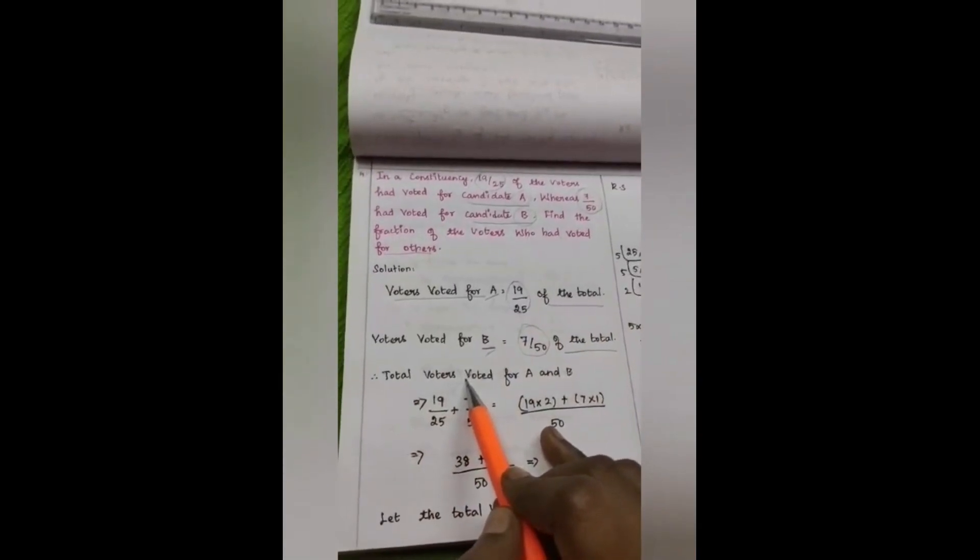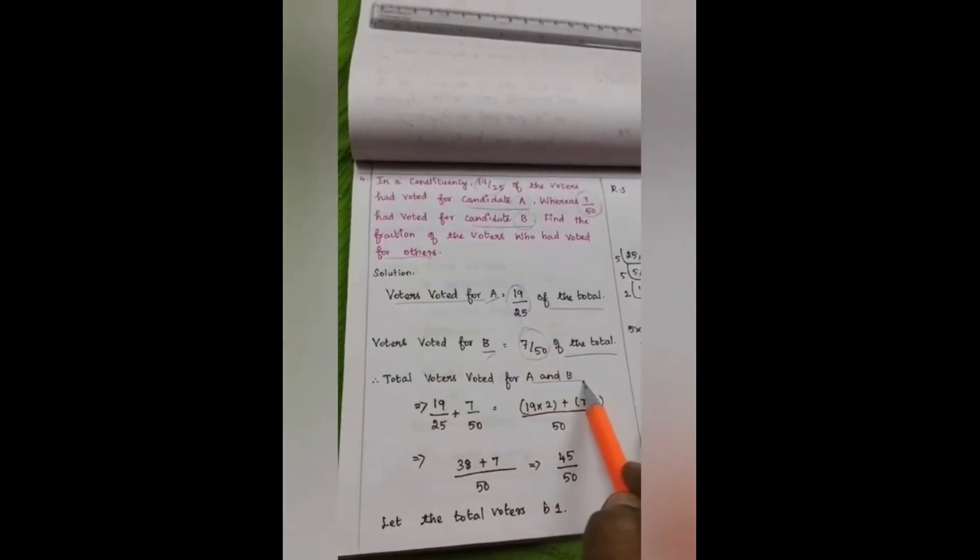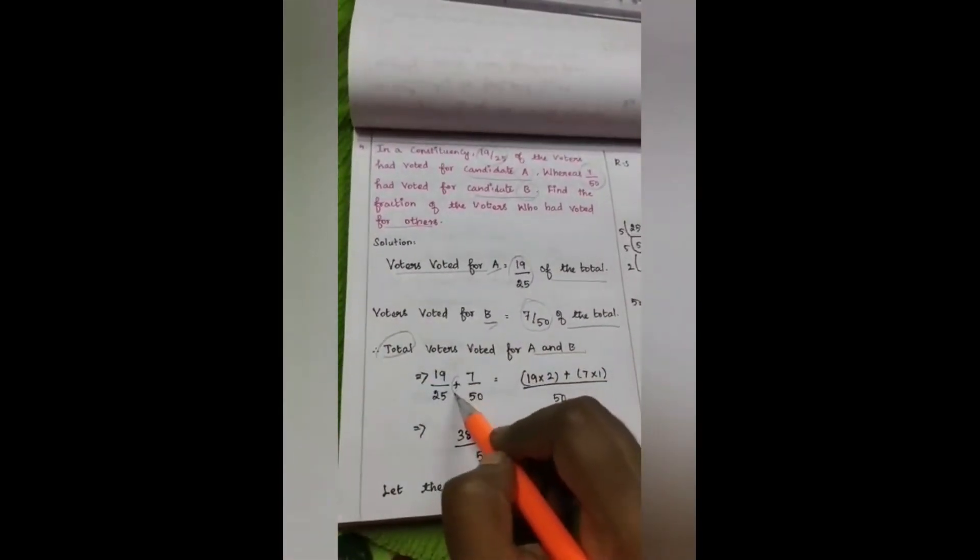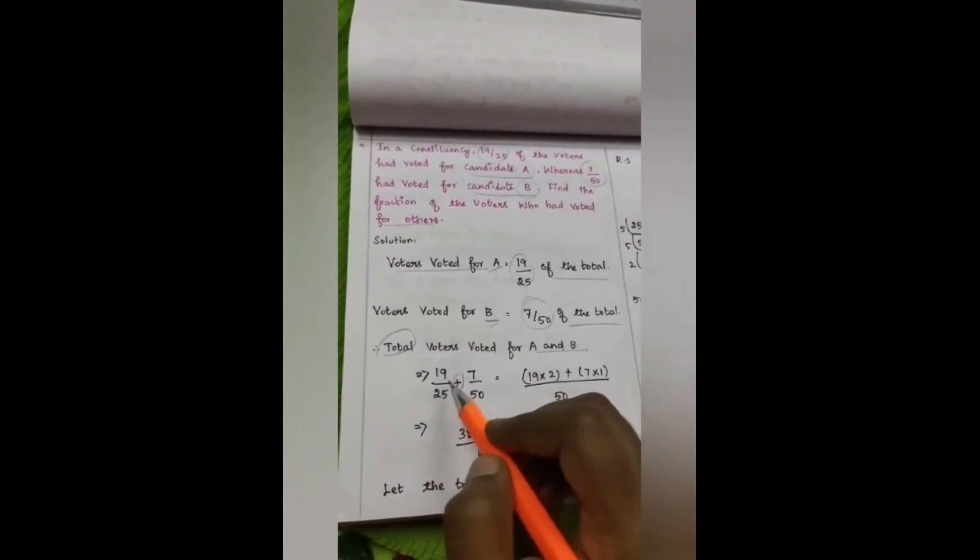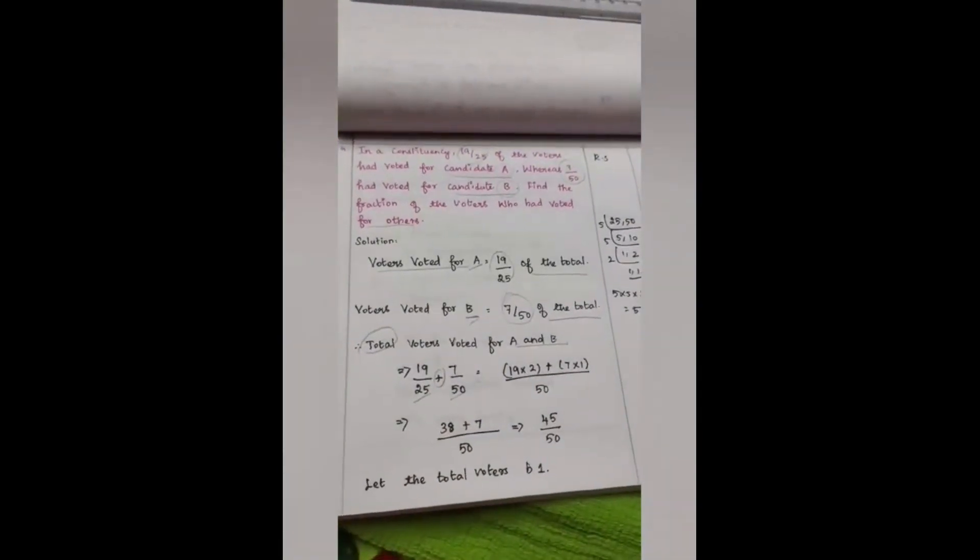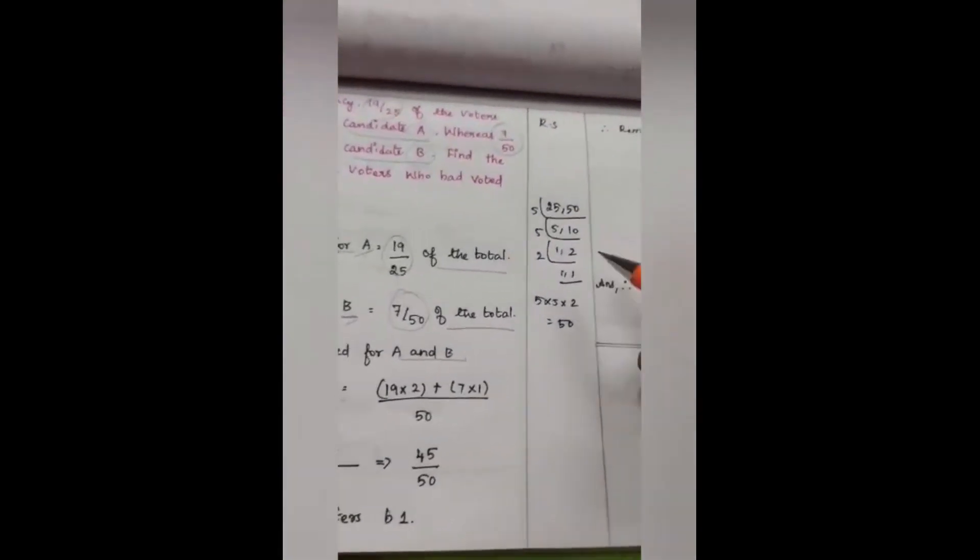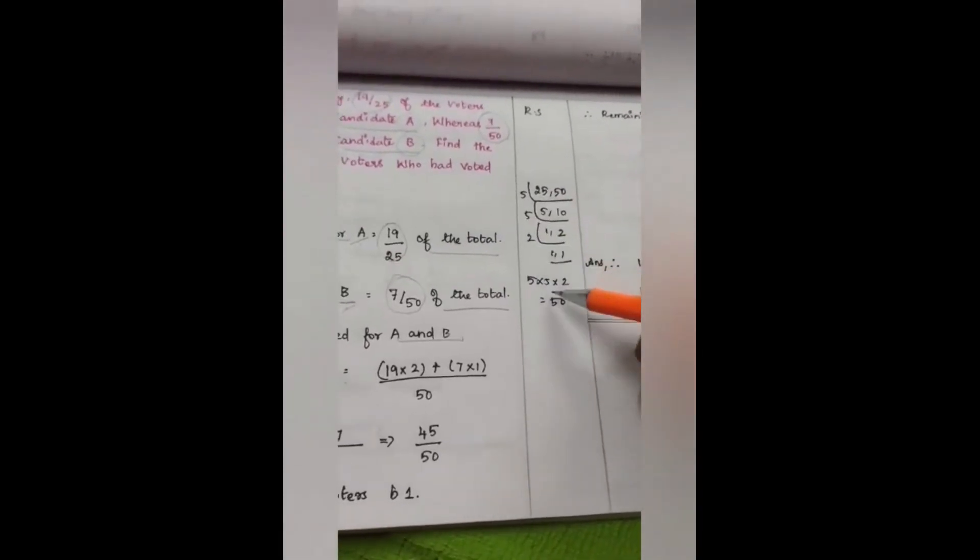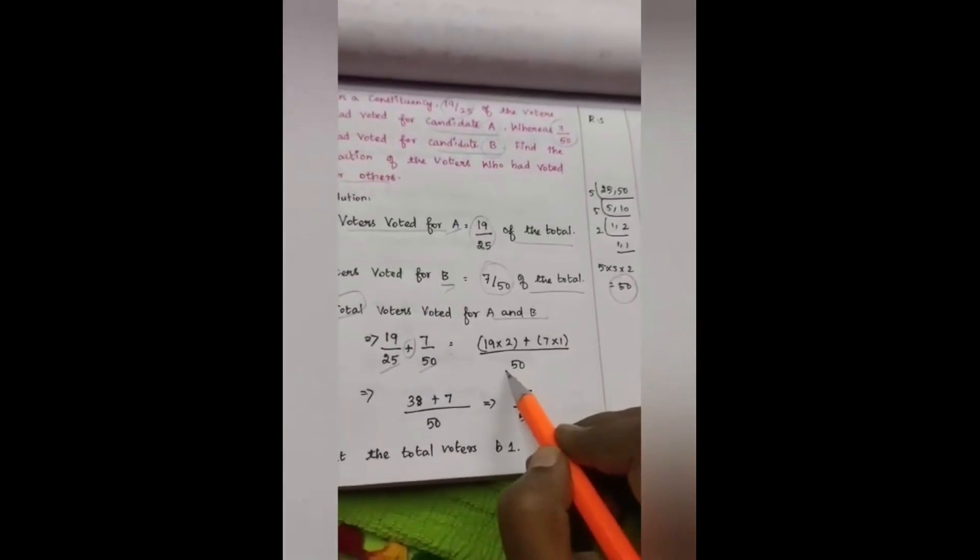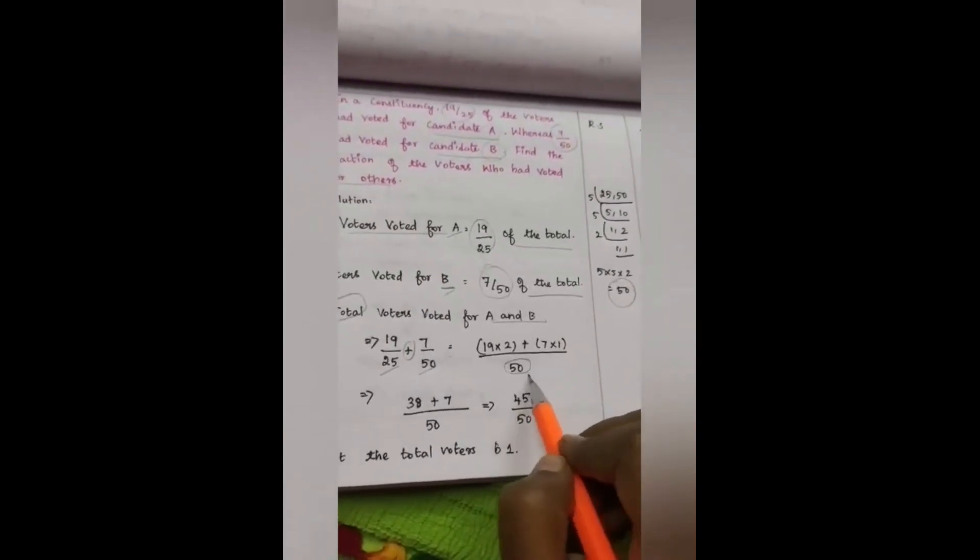Total in the sense, so here I'm considering this equation as 19 divided by 25 plus 7 by 50 which equals... See, here too we have different denominators. So what we have to do is, we need to take LCM. After taking LCM, we get 50 as our answer.